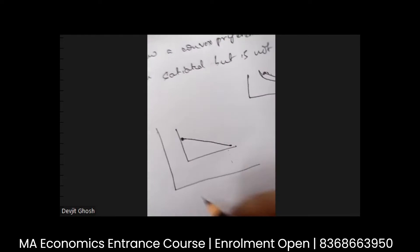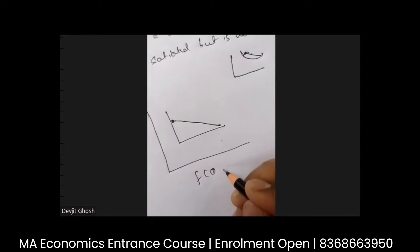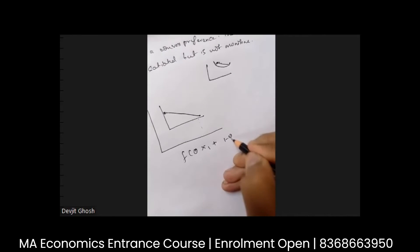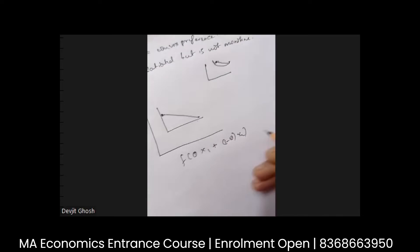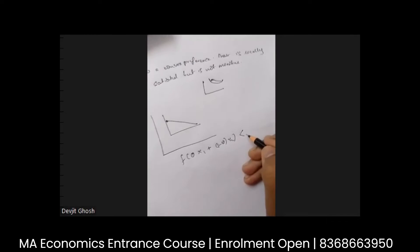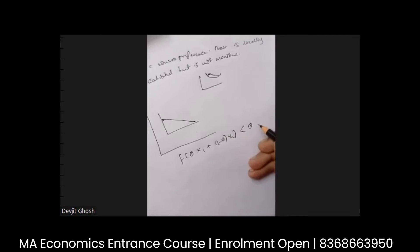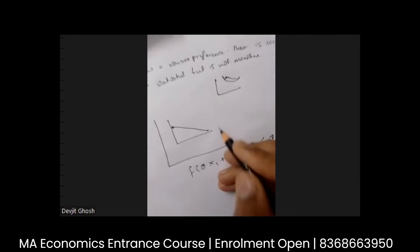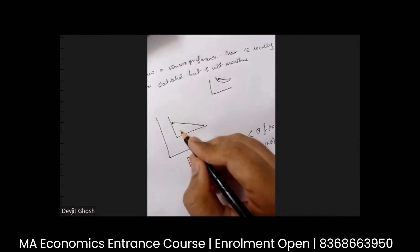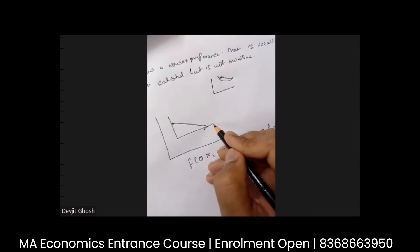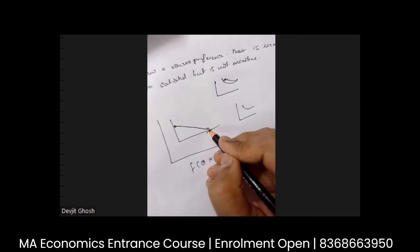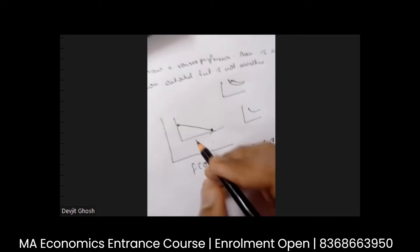any point that is f of theta x1 plus 1 minus theta x2, it will be less than theta f of x1 plus 1 minus theta f of x2, means it will be convex because it's still always the definition. I mean, if it is, it might not be a smooth one, but as per definition, it's a convex function.